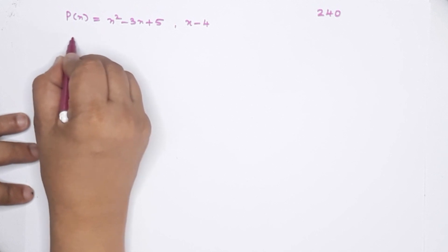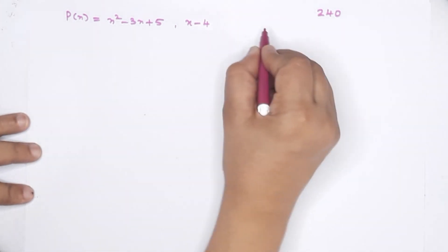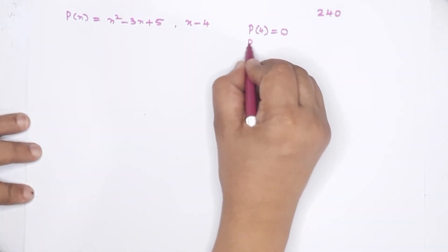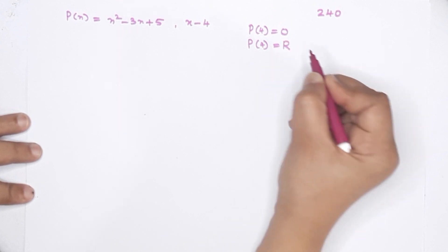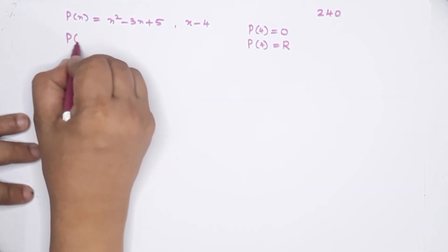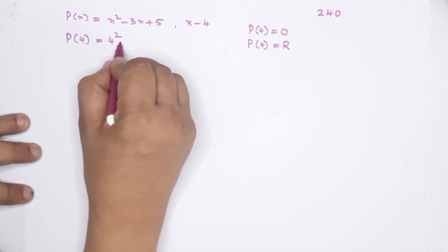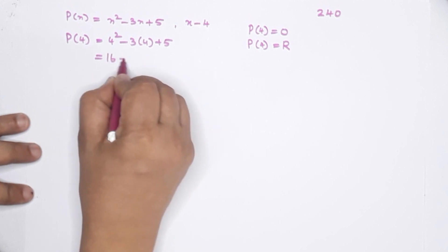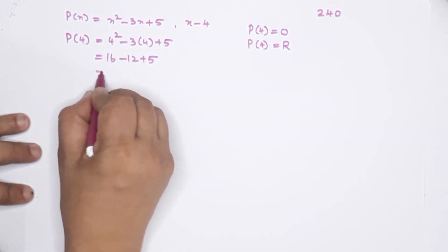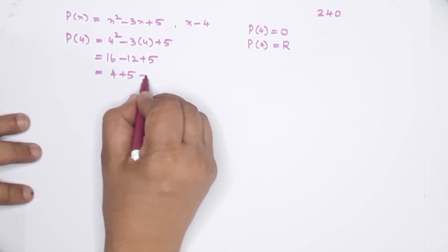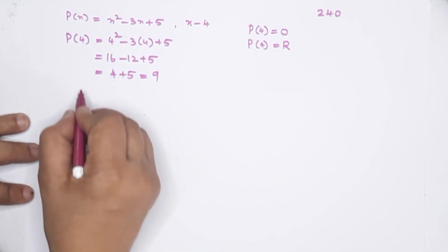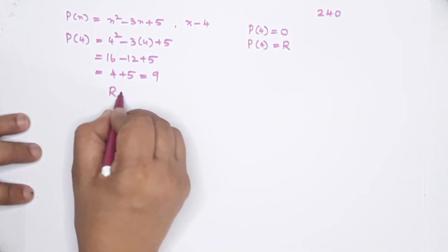Since the factor is not matched, we find P of 4 as the remainder. P of 4 is equal to 4 squared minus 3 into 4 plus 5, which equals 16 minus 12 plus 5, that is 4 plus 5. The answer is 9. So 9 is the remainder.